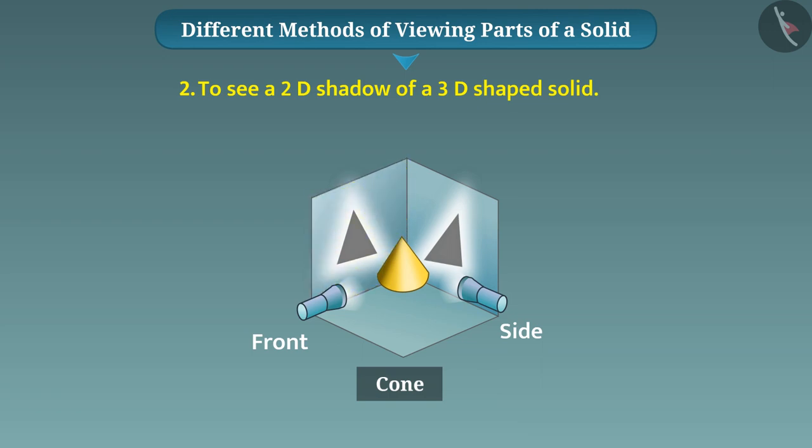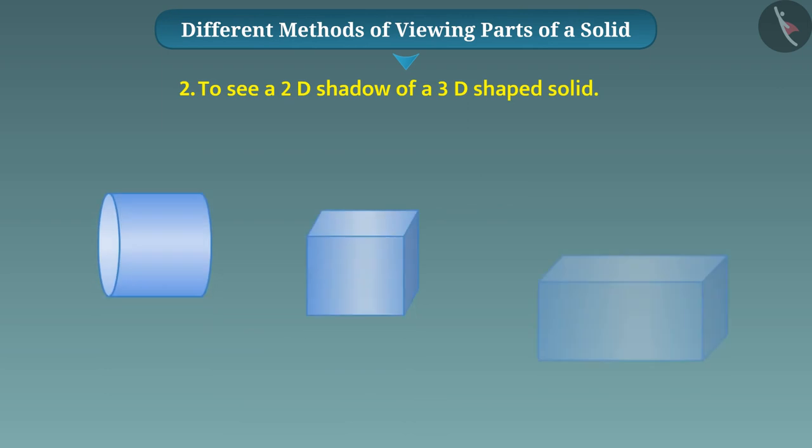Similarly, if a light is placed just above the cone and the screen is placed below, a circular-shaped shadow is obtained on the screen. In the same way, you practice the shadow of different objects and draw rough shapes in your notebook.